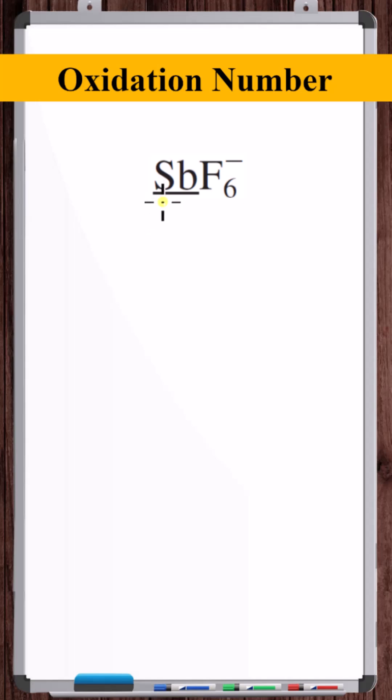Let's calculate the oxidation number of antimony in this SbF6^- polyatomic ion. The first thing we notice is that we have a halogen. Now with halogens, there are rules to follow.